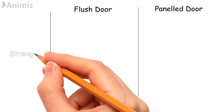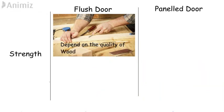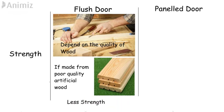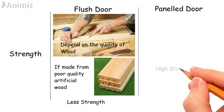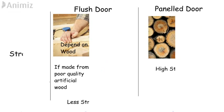Strength: The strength of a flush door depends on the quality of wood used in manufacturing the door. If a flush door is made of poor quality artificial wood, its strength can be less than a panel door — but that doesn't mean all flush doors have less strength. Panel doors have high strength as compared to flush doors as they are made from natural wood.